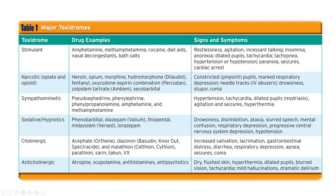Toxidromes are constellations of symptoms associated with a particular chemical agent. Think about stimulants, narcotics, sympathomimetic drugs, sedatives, cholinergics, and anticholinergics — all have particular signs and symptoms associated with them. Being familiar with these toxidromes can help identify the causative agent. For example, a typical opiate overdose presents with constricted pupils, respiratory depression, needle tracks, drowsiness, stupor, coma, or cardiac arrest. All these signs should raise your index of suspicion toward opiate overdose.